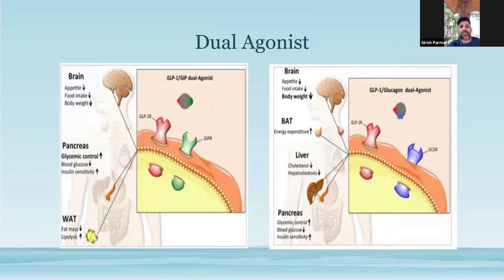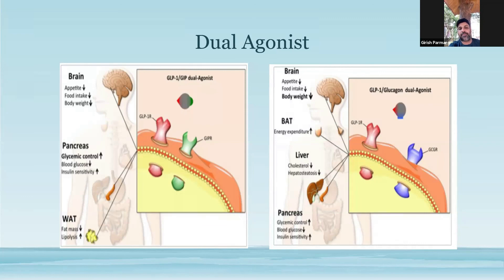In a snapshot, for dual agonist GLP-GIP simultaneous receptor stimulation: at the level of the brain, good weight loss by decreasing appetite and food intake, improving satiety; at the level of the liver, glucose metabolism improves; at the level of the fat, there's some lipolysis and decrease in fat mass with co-stimulation of GLP and GIP receptors. For co-stimulation of GLP-1 and glucagon receptors, you see similar degree of weight loss and improvement in glucose profile, with better results as far as browning of adipose tissue and hepatic steatosis are concerned.